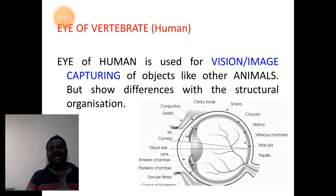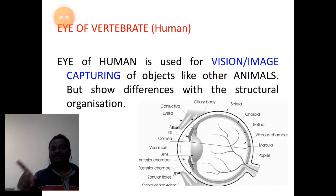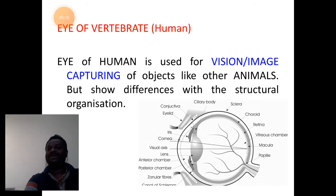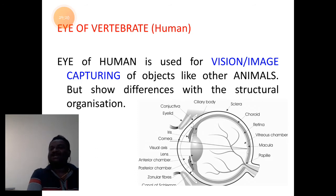After understanding the eye of cephalopod, we shall now understand the anatomical details of the eye of vertebrate — that is, the human eye. This is a concept you have already learnt in your previous semester under physiology.